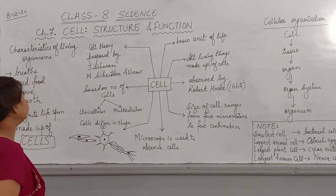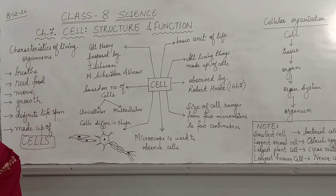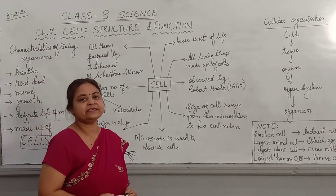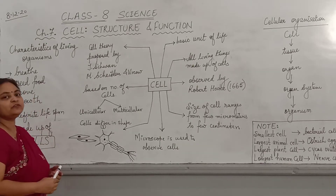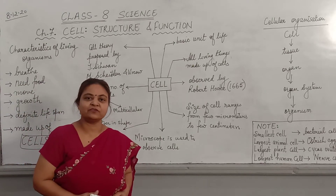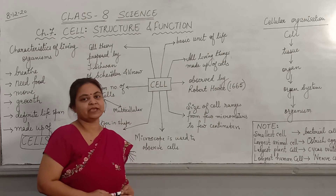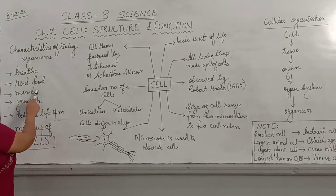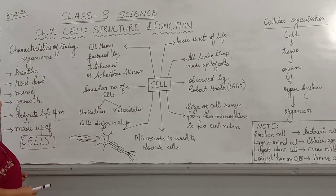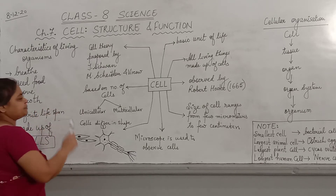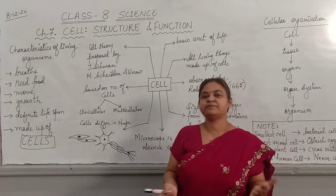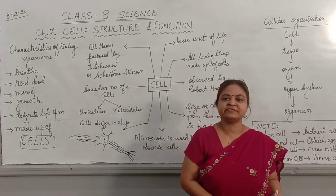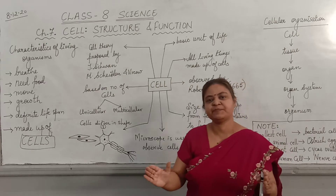These characteristics differentiate them from non-living things. Living organisms breathe — they take in oxygen to release energy from food. They need food; without food, living organisms cannot survive. So feeding is one of the important characteristics. Most living organisms also show movement. Living organisms grow and they have a definite lifespan — that means they die after some time, maybe a few years, months, or weeks.